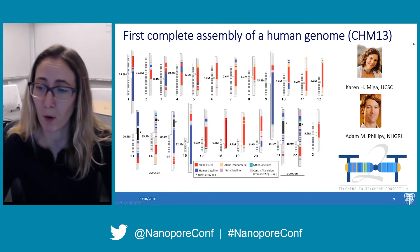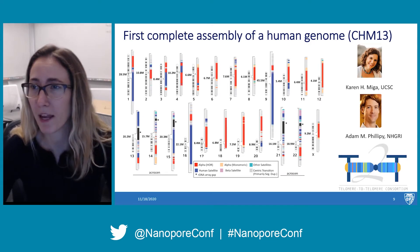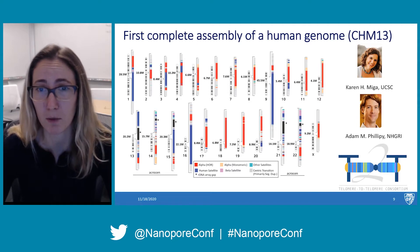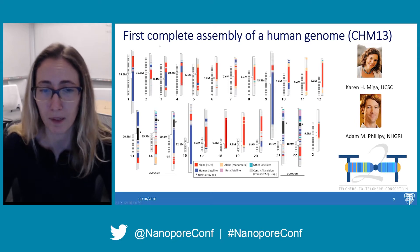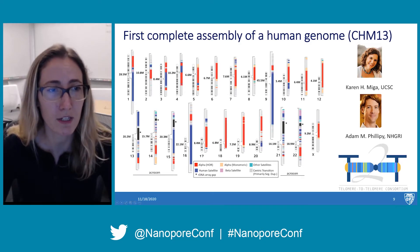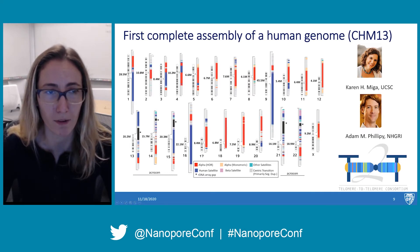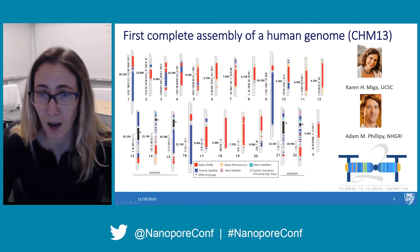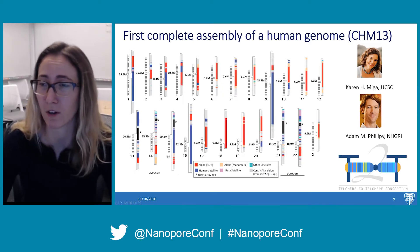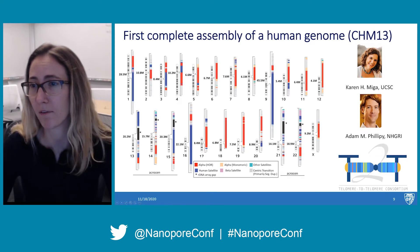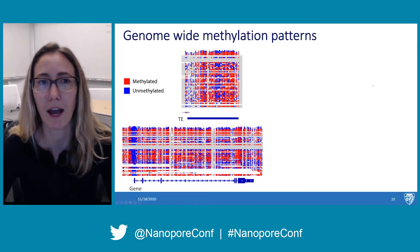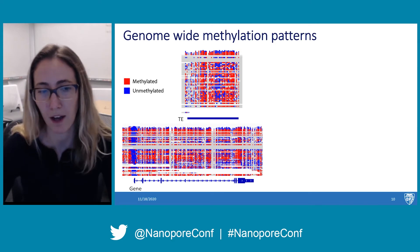To get around this, we've been working with the Telomere to Telomere Consortium, led by Karen Miga and Adam Phillippe, who successfully assembled the first ever complete assembly of a human genome with only five remaining gaps — the most complete human genome assembly ever produced. The gaps in GRCH38 are almost completely filled in in this new reference assembly, including all centromeric regions and most human satellites and gap regions from GRCH38. This was a huge collaborative effort with people from institutions all over the world.